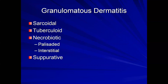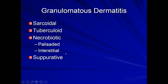Moving on to granulomatous inflammation. There are different ways to divide the categories. Sarcoidal granulomas tend to be the 'naked' granulomas — nodular collections of histiocytes, some multinucleated, with fewer surrounding lymphocytes. Tuberculoid granulomas tend to have lymphocytes and plasma cells surrounding the nodules, possibly with caseating necrosis. Necrobiotic types are separated into palisaded or interstitial patterns — either palisading around an area of necrobiosis or histiocytes distributed more interstitially. You can also have suppurative and granulomatous dermatitis.